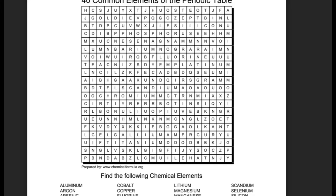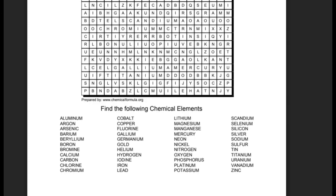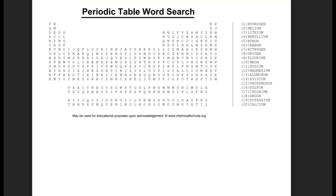Once you have copied down the picture, next we have two word searches. Again, you can find the word searches in the link in the description below. Print out the word search and complete them. This would be a good way to learn some of the elements named that are on the periodic table.